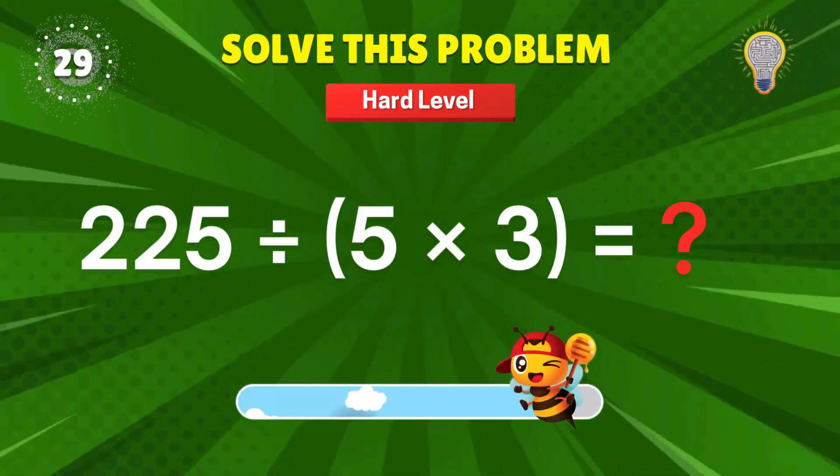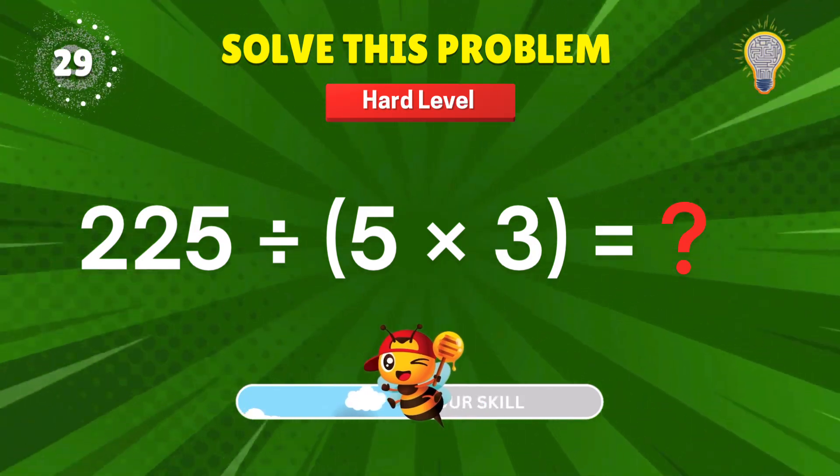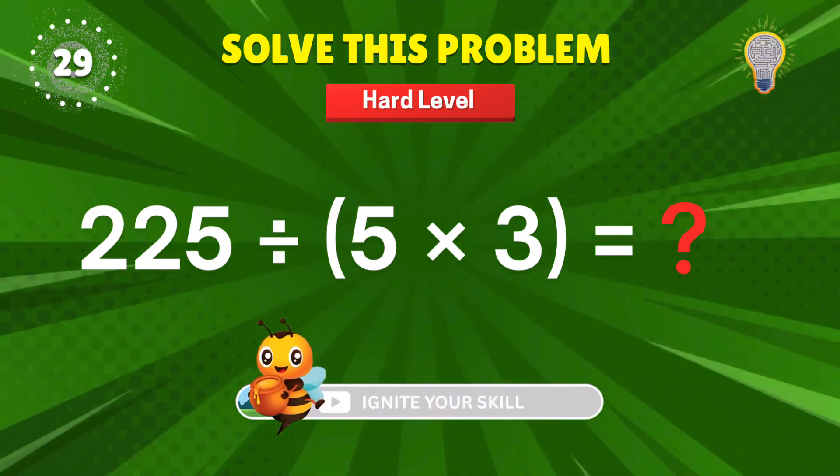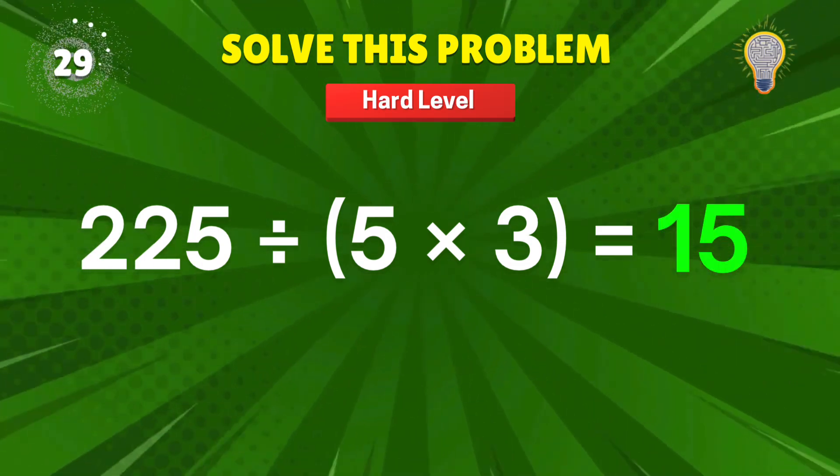225 divided by 5 times 3? A puzzle within a puzzle. 15. Brain equals buff. Plus 1 to you.